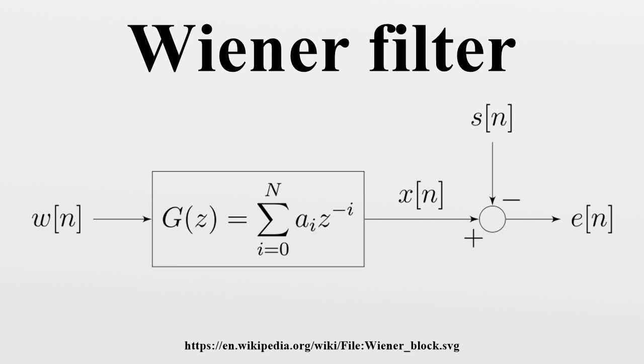In signal processing, the Wiener filter is a filter used to produce an estimate of a desired or target random process by linear time-invariant filtering of an observed, noisy process.